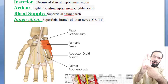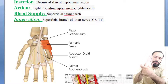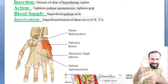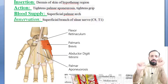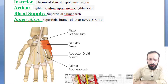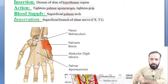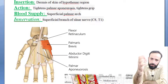Palmaris brevis inserts into the dermis of the skin of the hypothenar region. It gets its origin at the flexor retinaculum and travels a little bit backward to insert into the dermis of the skin of the hypothenar region.